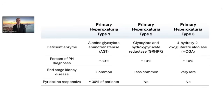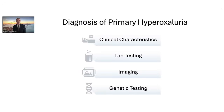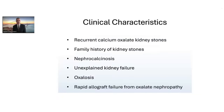Next we'll focus on how to diagnose primary hyperoxaluria, covering clinical characteristics, lab testing, imaging, and genetic testing. Clinical characteristics to look for include recurrent calcium oxalate kidney stones — especially if stone composition is near 100% calcium oxalate monohydrate, which can be a strong clue. A family history of kidney stones and nephrocalcinosis are also important indicators.